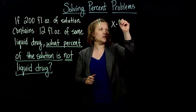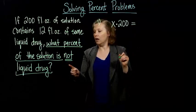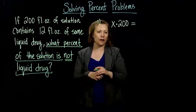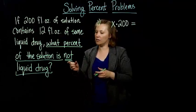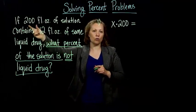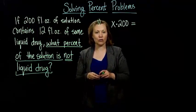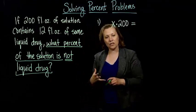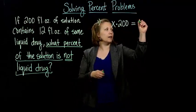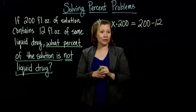And then is not liquid drug. So they told us how much was liquid drug, but what we need to know is how much is not liquid drug. So if you have 200 total fluid ounces, and 12 fluid ounces of that is the drug, how could we figure out how much is not the drug? Well, it's the 200 fluid ounces take away the 12 that is the drug.